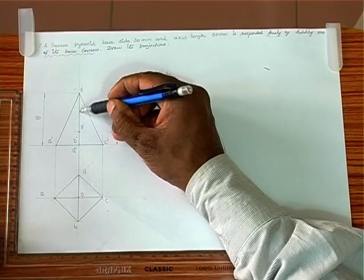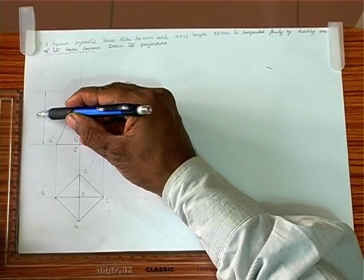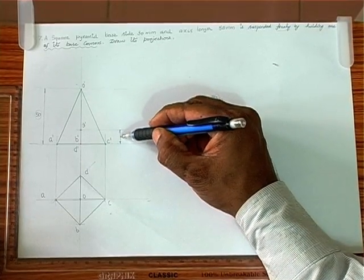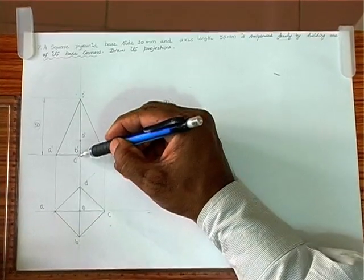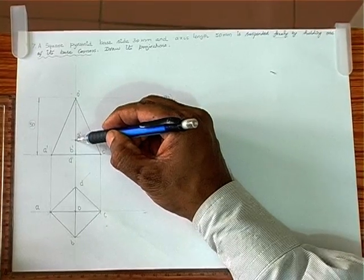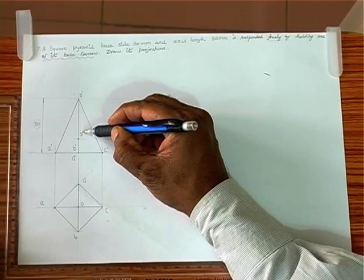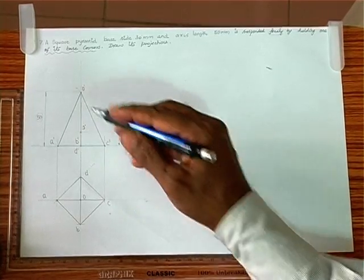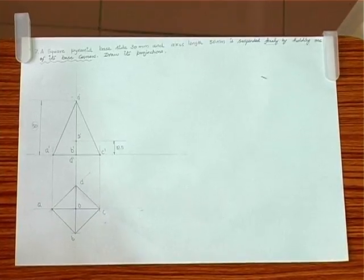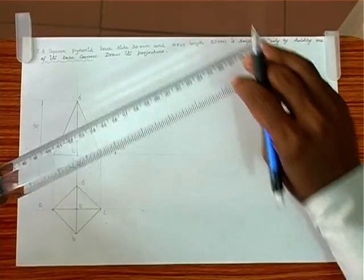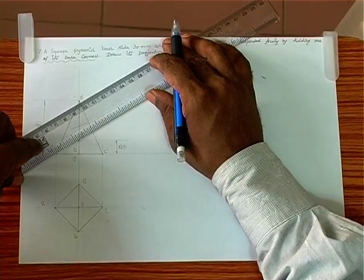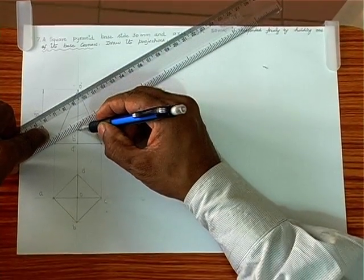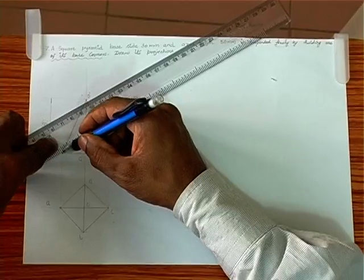The height of the object is given as 50 mm. Therefore, the center of gravity lies at one-fourth of the height from the ground, which is 12.5 mm. We identify one point G', which is at a height of 12.5 mm from the ground. We then join corner A with that center of gravity G', giving us a line.